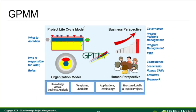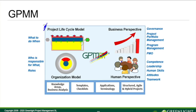We have this overall picture. We will talk about the product lifecycle model, the business perspective, the organizational model, the human perspective, and we will talk about knowledge areas, templates and checklists, applications, terminology, and we will talk about structured, agile and hybrid projects on a high level. Many of these things we will go deeper into in other parts of this course and in other courses in this course suite.